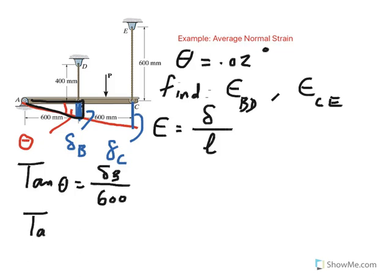And similarly, you could say the same angle, tangent of the same angle, if you now look at this triangle, would be opposite, which would be delta C, divided by adjacent, which in this case is 1200 millimeters.